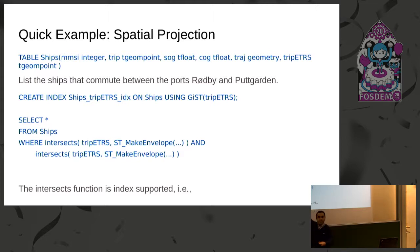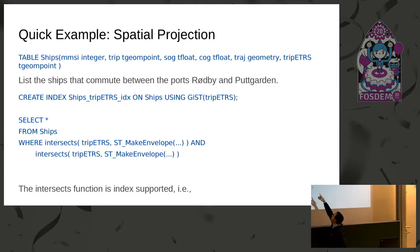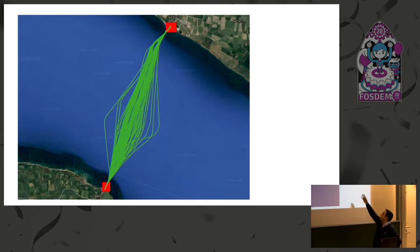Basically, the two ports are represented as two rectangles, and we are interested in trips that intersect both rectangles together — two 'intersects' predicates. This predicate is a MobilityDB one: it accepts a trajectory — a temporal geometry point — and some geometry, and returns a boolean. To do this efficiently, you need an R-tree, so you create a GIST index over the projected trip column. The result shows the two ports as red rectangles and all the ships traversing between them.